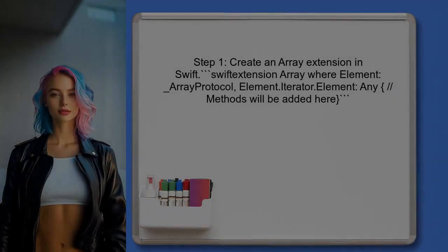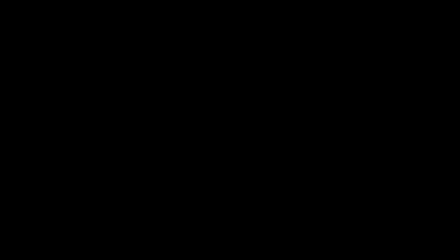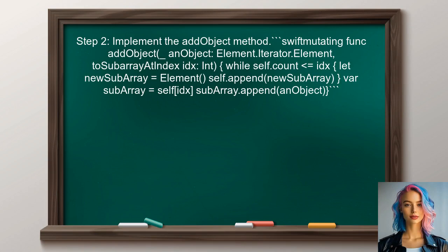To begin, the user needs to create a new extension for the array type in Swift. This extension will allow for adding an object to a specific index in a two-dimensional array. Next, the user should implement the method to add an object to a subarray at a specified index. This method will ensure that the subarray exists before attempting to add the object.